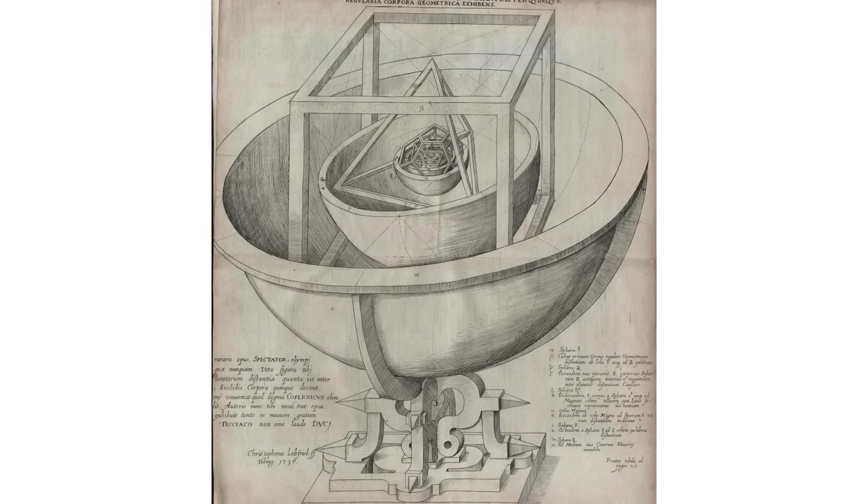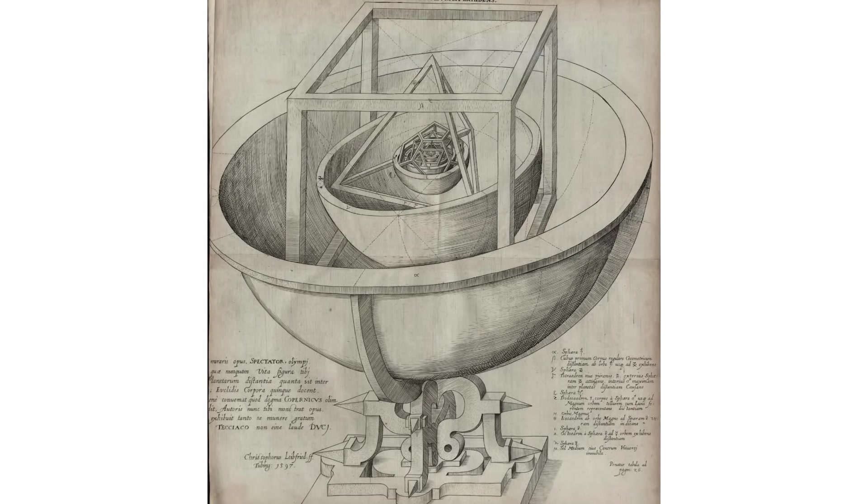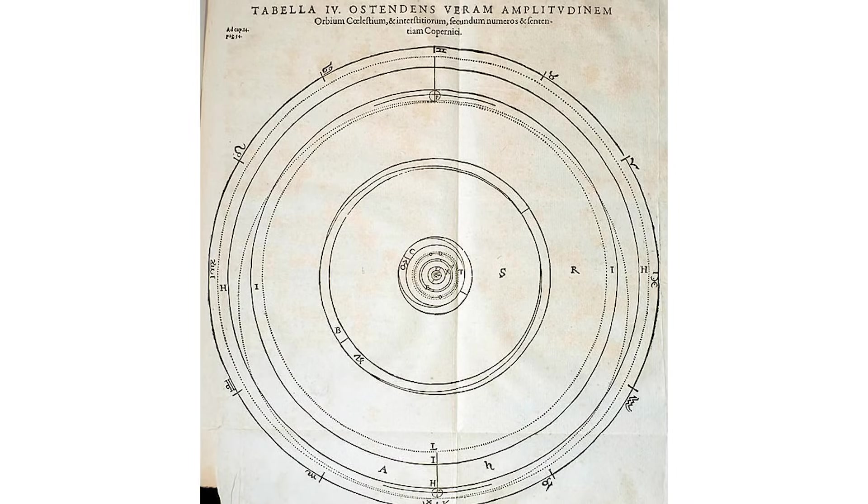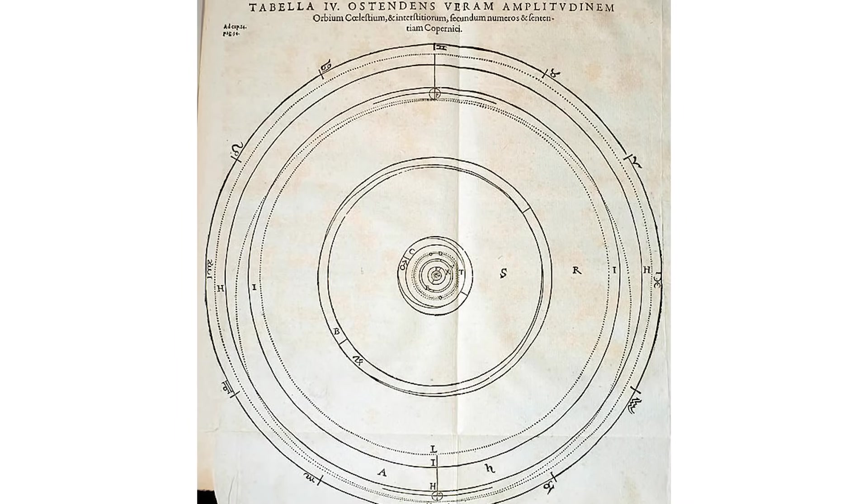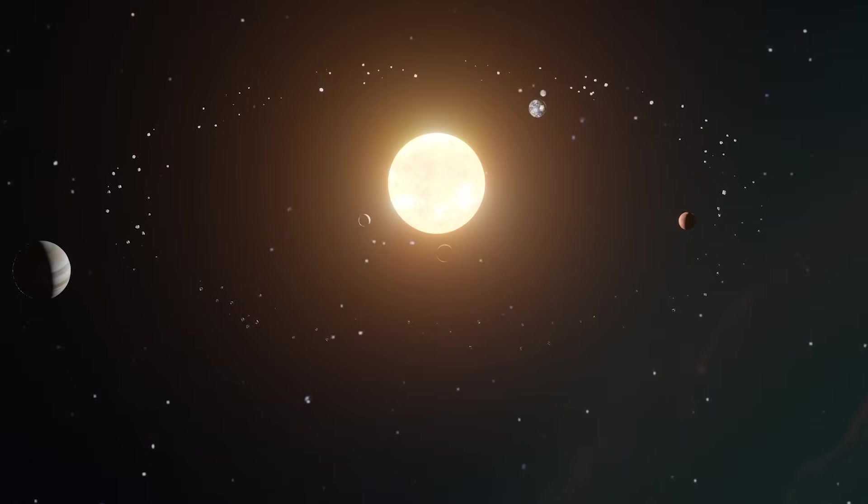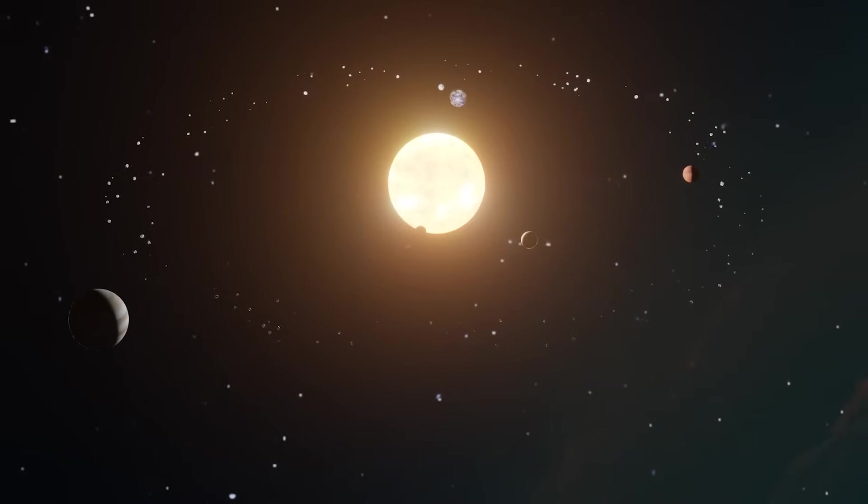The platonic solids are fascinating shapes from engineering, mathematical, and historical perspectives. Kepler theorized that the platonic solids were related to the orbits of the planets. Although this theory was fundamentally wrong, this heralded one of the major shifts in our understanding of the solar system.